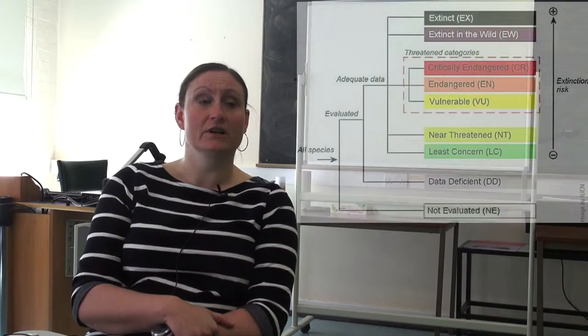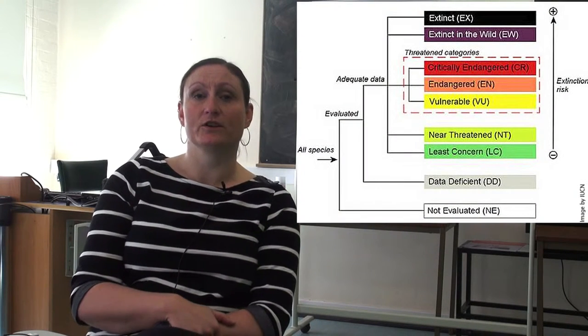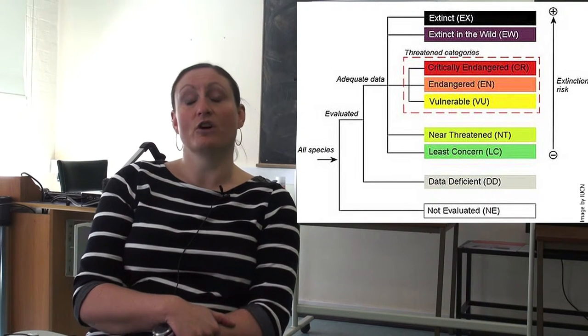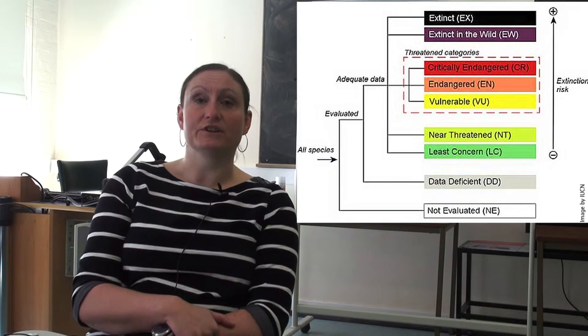Basically they use a range of criteria to decide if they think there's a great risk to the extinction of a particular species. Usually they try to reassess species every four or five years just to make sure they're keeping up with any developments. So if you hear terms like 'critically endangered' or 'near threatened,' those terminologies are linked to the Red List and give you a rough idea of how at-risk a species is.